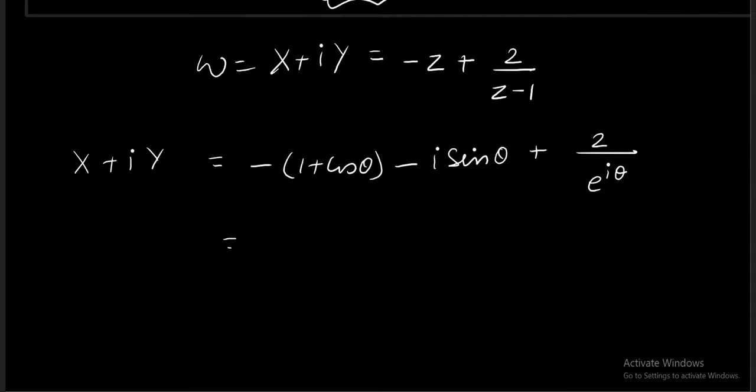This is capital X plus iota capital Y. Let's write it further. It is minus 1 minus cos theta minus iota sin theta plus 2 times cos theta minus iota sin theta.